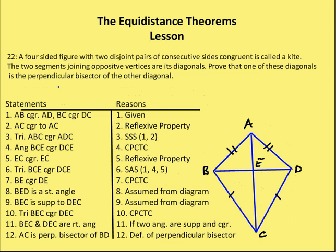Moving on to problem 22: a four-sided figure with two disjoint pairs of consecutive sides congruent is called a kite. I have to create the diagram in this case. The two segments joining the opposite vertices are its diagonals, BD and AC. We need to prove that one diagonal is the perpendicular bisector of the other. We're given that AB and AD are congruent, and BC and DC are congruent.